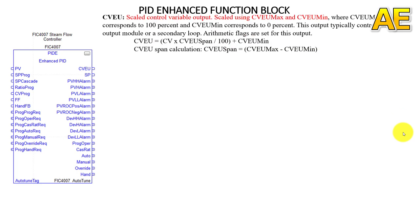Now I will talk about the outputs. The first output is CV EU — the scaled control variable output, scaled using CV EU max and CV EU min, where CV EU max corresponds to 100% and CV EU min corresponds to 0%. This output typically controls an analog output module or a secondary loop.